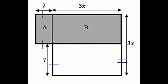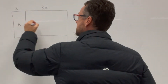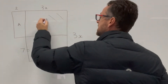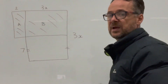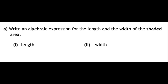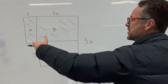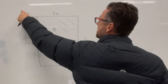Here we have a series of rectangles. This one here is labelled A, this one is labelled B, and this bit here is the shaded area — where A and B are the shaded area. The first thing asked is to create algebraic expressions for the length and width of the shaded area. So we need the width of this part and the length of that part.